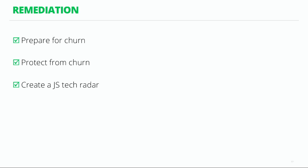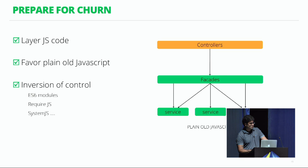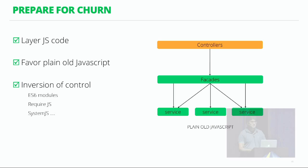To remediate this, prepare for churn, protect yourself from it, and create a JavaScript tech radar within the enterprise. When preparing for churn, note that front-end code has moved beyond simple validation — frameworks like Angular or Ember have a lot of logic in the front-end. Layer your code within your MVC framework: controllers manage your UI, facades delegate to a service layer, which then talks to your back-end. Keep your facade services in plain old JavaScript so only your controllers are coupled to the framework undergoing churn, making it easier to change.